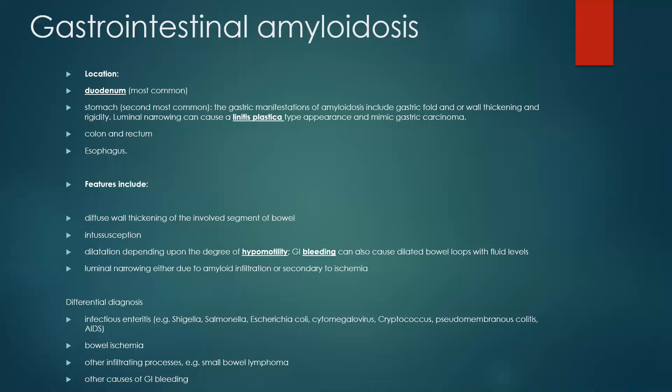It can also affect the colon, rectum, and esophagus. Features in the gastrointestinal system include diffuse wall thickening, intussusception, hypomotility, GI bleeding, and luminal narrowing due to either infiltration or ischemia.